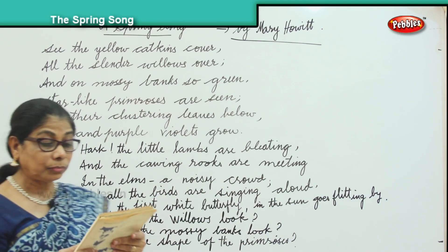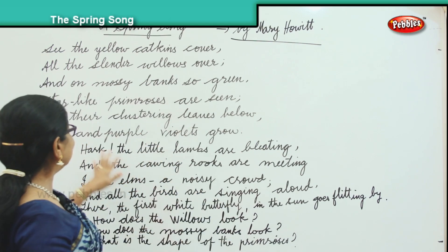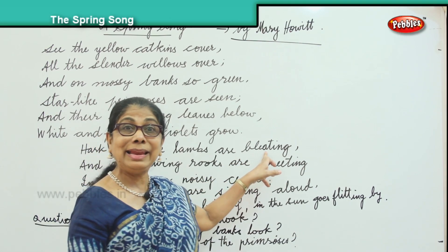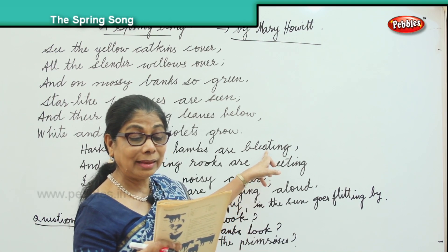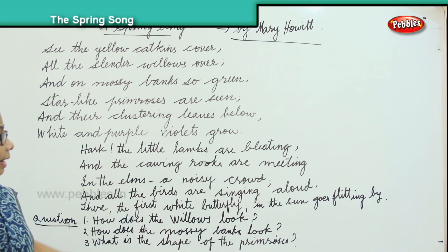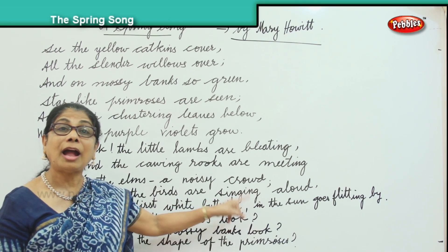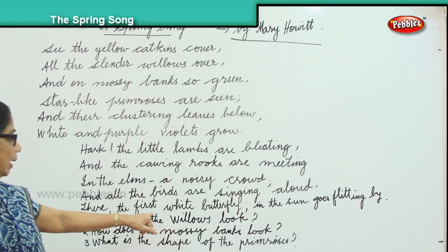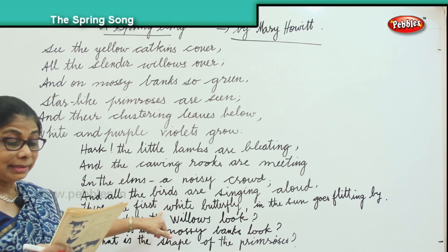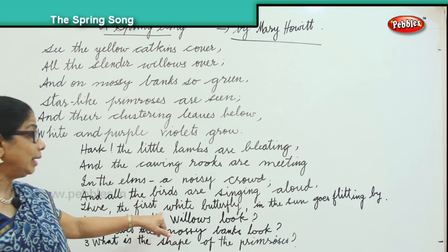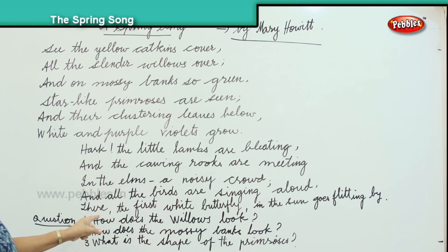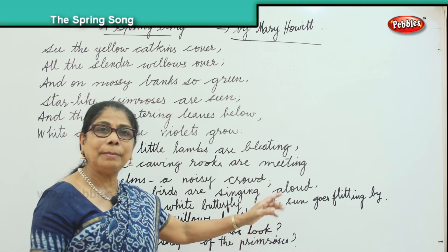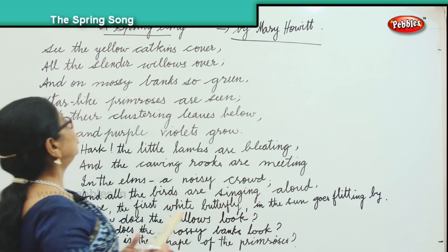The next question is, what do the little lambs do? The little lambs are bleating. What are the birds doing? The birds are singing. How are the birds singing? The birds are singing aloud. What are the butterflies doing? The butterflies are flitting by in the sun.